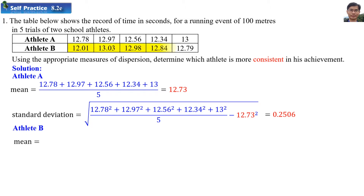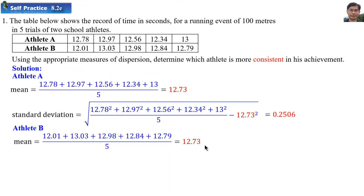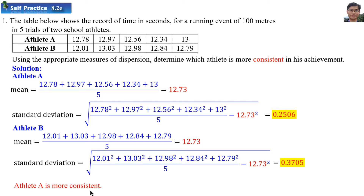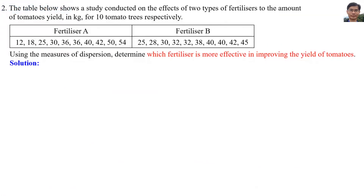For Athlete B, we calculate the mean as the average of all the values. The standard deviation equals 0.3705. We compare the standard deviations of both athletes and find that Athlete A is more consistent because Athlete A has a smaller standard deviation.